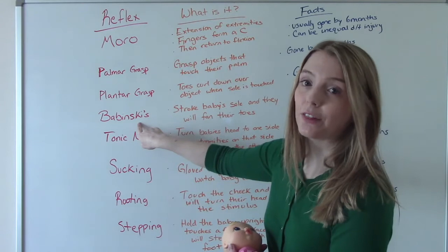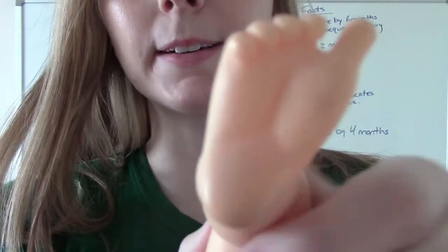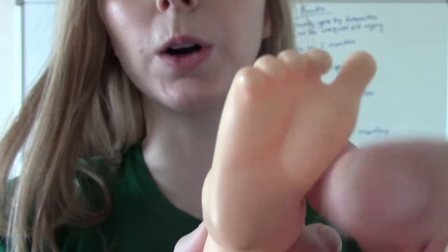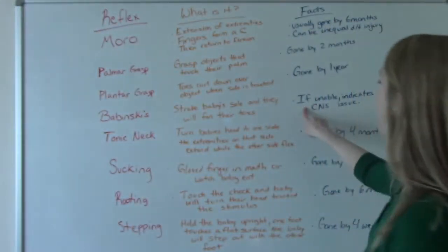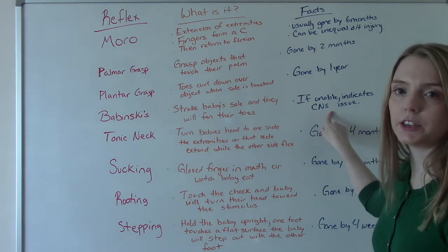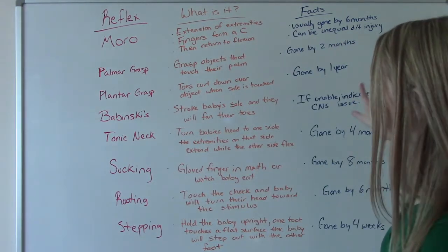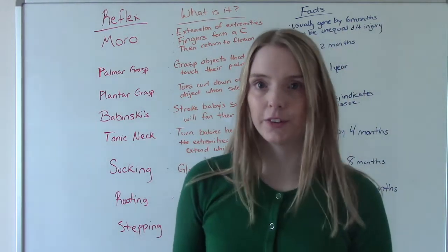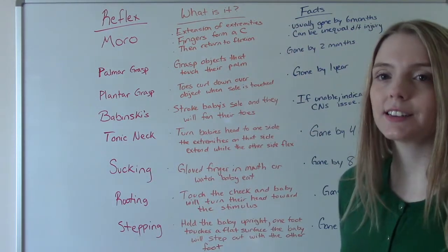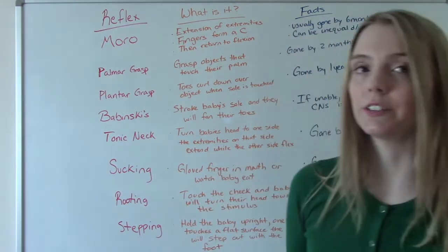Babinski's reflex is another foot one. Baby's foot, and then you gently stroke the sole, and then the toes will start to flare out. If they are unable to do this, this is indicative of a central nervous system issue. Actually, this is what we're checking when we're doing the reflexes—their neurological function. If they're unable to elicit some of these reflexes, it's a sign that maybe something's going on with their CNS, their central nervous system.